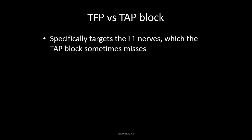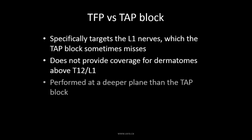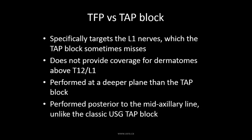A question that is often asked is: how does the TFP block differ from the TAP block? The TFP block is designed to block the L1 nerve branches, which the TAP block does not reliably cover. It does not, however, cover the dermatomes above L1 and T12. Local anesthetic is injected into a deeper tissue plane — the plane deep to transversus abdominis rather than superficial to it. The site of injection is also posterior to the mid-axillary line, unlike the classic ultrasound-guided TAP block.